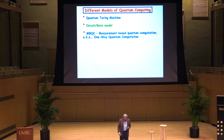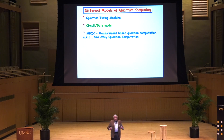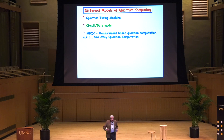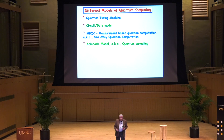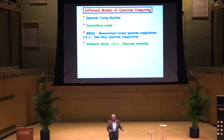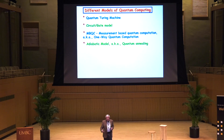There is another very interesting model: measurement-based quantum computation, also known as one-way computation. One creates a huge entangled state and then performs a series of adaptive measurements, each measurement depending on the previous ones. There is also the adiabatic model, used by the D-Wave, also known as quantum annealing. Based on the adiabatic principle, you start with a very simple Hamiltonian, change the system very slowly, and the quantum system stays in the ground state. At the end, the ground state of the Hamiltonian contains the information you're computing.